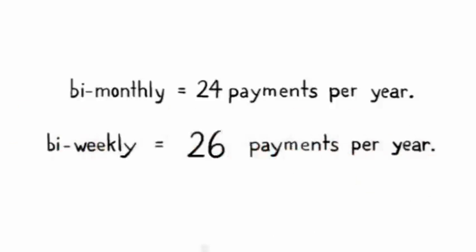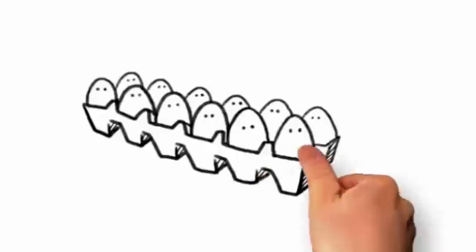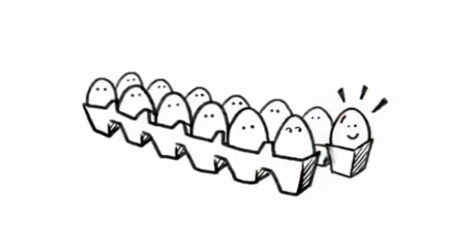Well, when you switch to weekly or bi-weekly, you're simply making one more month of payments per year. You could think of it as giving yourself an extra month every year to pay down your mortgage.